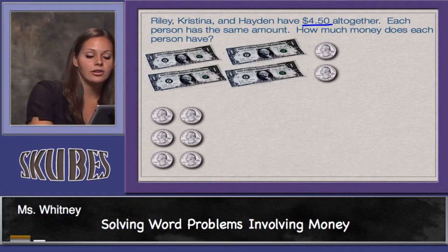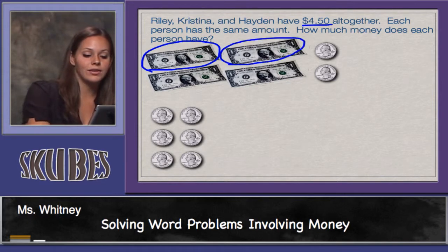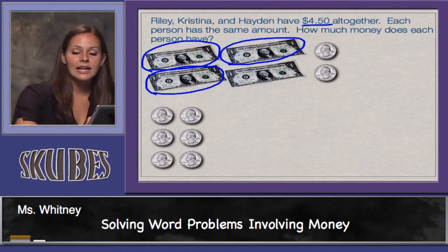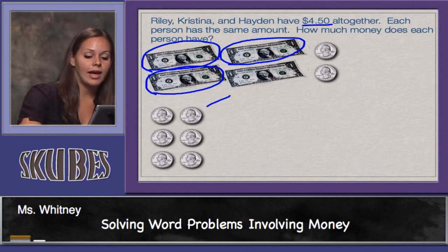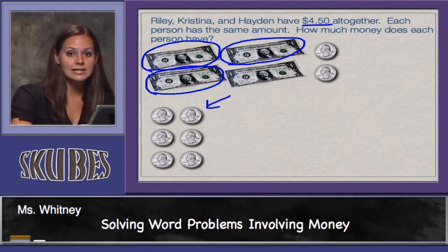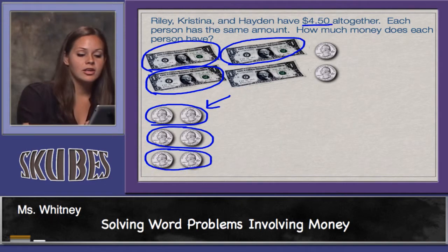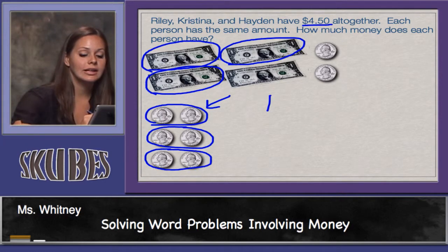First, I'll look at the dollars. Riley can have a dollar, Christina can have a dollar, and Hayden can have a dollar. Now we still need to divide the remaining one dollar and fifty cents equally. Let's think of one dollar and fifty cents as six quarters. Now we can divide those six quarters easily among three people — each person will get two quarters. So four dollars and fifty cents divided equally among three people leaves each person with one dollar and fifty cents.